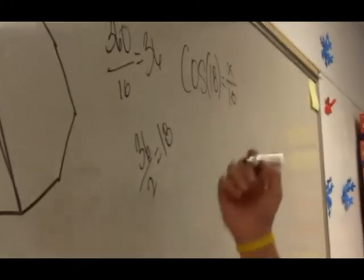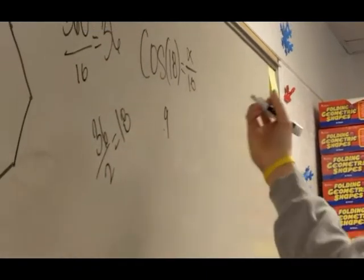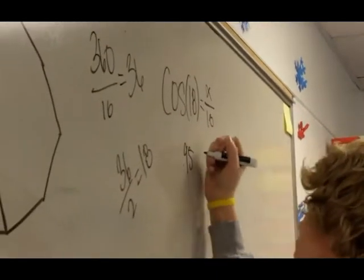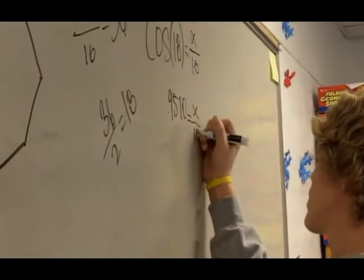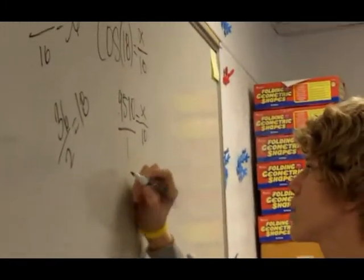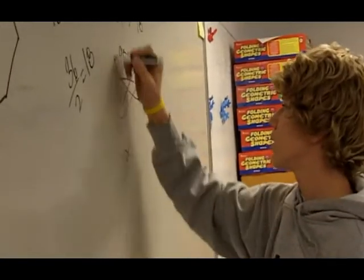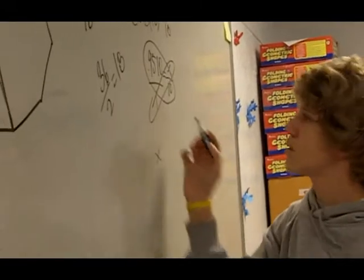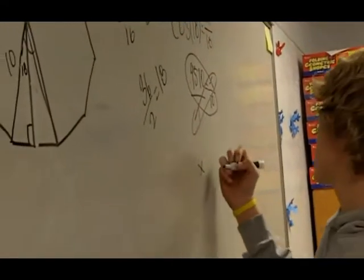And that gives me 0.9510 equals x over 10, and because this is a fraction I want to make this a fraction and then I do cross multiply. So x times 1 equals x, which is 10 times 0.951 equals